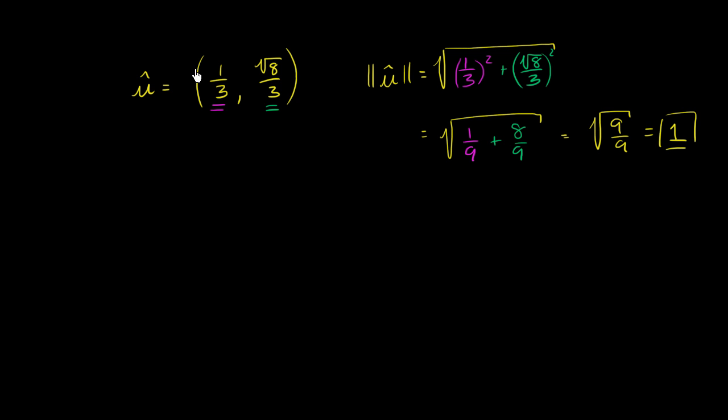So this is indeed a unit vector. Now let's say someone says, well, I like this direction, but I don't want the magnitude to just be 1. I want to find some vector v that has the same direction.